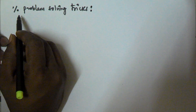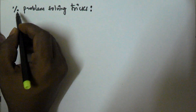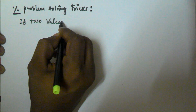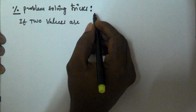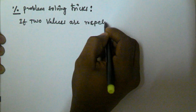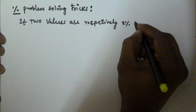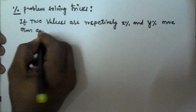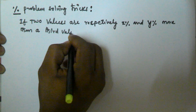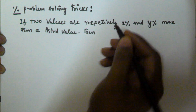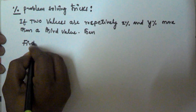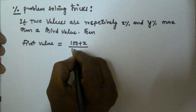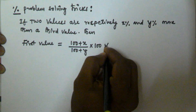Hello friends. In this video I will show you a trick to solve a problem related to percentage. If two values are respectively x percentage and y percentage more than a third value, then the first value is equal to (100 plus x) by (100 plus y) into 100 percentage of the second value.